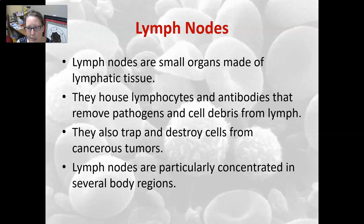Lymph nodes are small organs made of lymphatic tissue. They house lymphocytes and the antibodies that those lymphocytes produce, which help remove pathogens and cell debris from lymph. There are also macrophages in the lymph nodes that trap and destroy cells from cancerous tumors. Lymph nodes are particularly concentrated in several body regions.